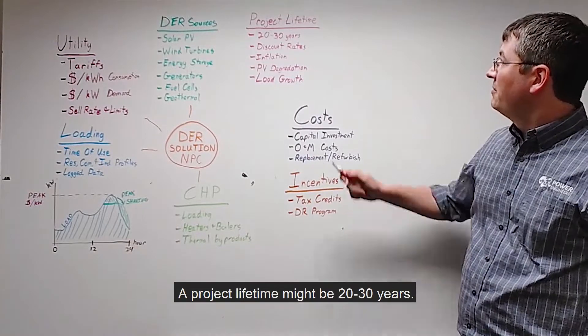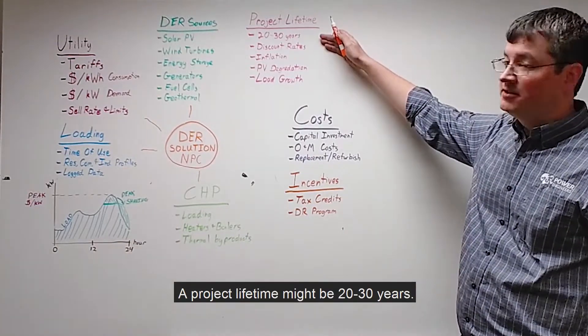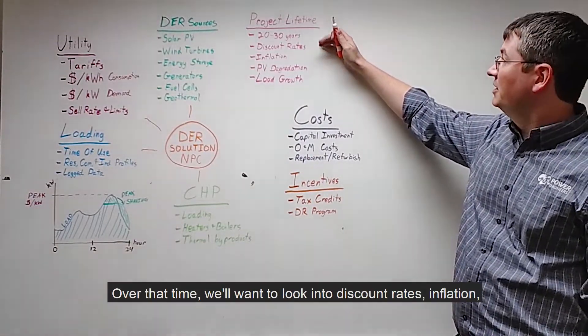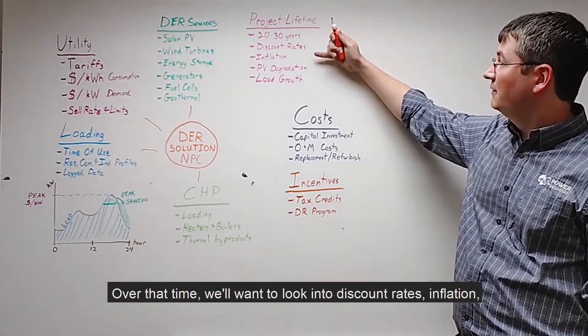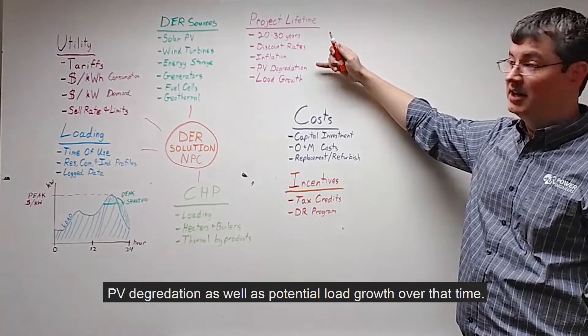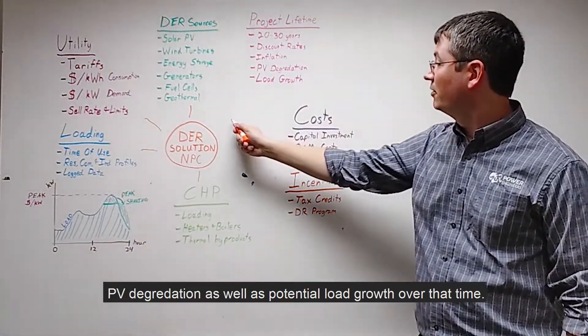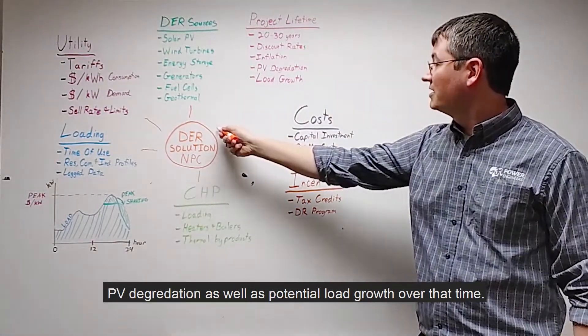A project lifetime might be 20 to 30 years. Over that time, we can look into discount rates, inflation, PV degradation, as well as potential load growth over that period.